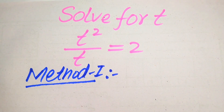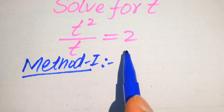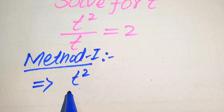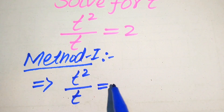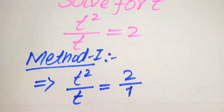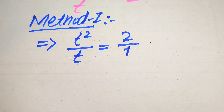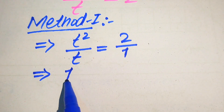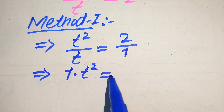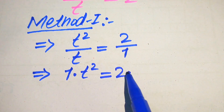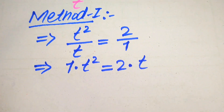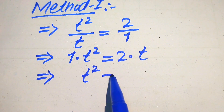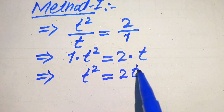In the first method, notice the denominator on the right-hand side is 1, so we rewrite our equation as t squared divided by t equals 2 divided by 1. Now we cross multiply: 1 multiplied by t squared equals t multiplied by 2, which gives us t squared equals 2t.